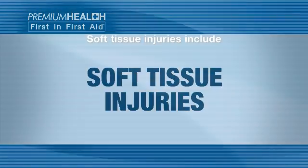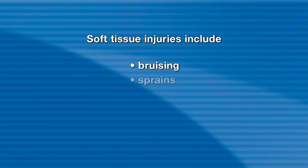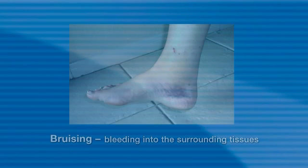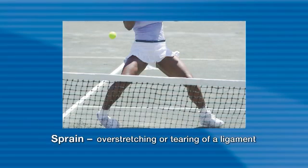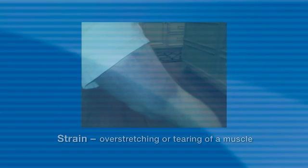Soft tissue injuries include bruising, sprains and strains. Bruising is bleeding into the surrounding tissues, which will characteristically be purple. Over time it will fade to green and finally yellow. A sprain is overstretching or tearing of a ligament which supports a joint. A strain is overstretching or tearing of a muscle and/or tendon.